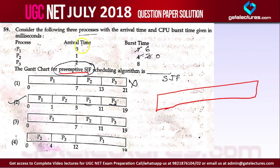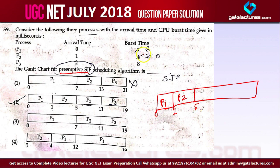Initially, only one process is available at arrival time 0, so we will schedule P1 at time 0. From 0 to 1, P1 will run. Then at time 1, we have a smaller process, P2, so P2 will run completely because it will always be the smallest. So P2 runs from 1 to 5, and now P1's remaining burst time becomes 6 because we already ran P1 for one time unit.